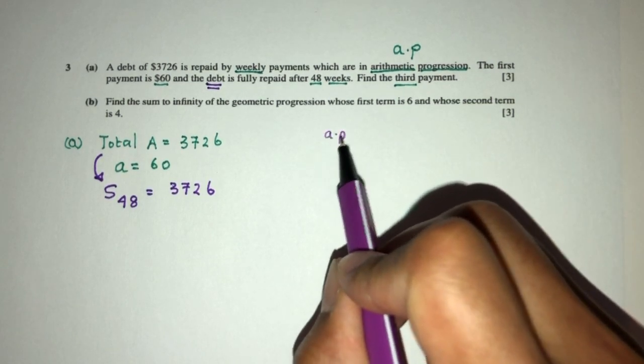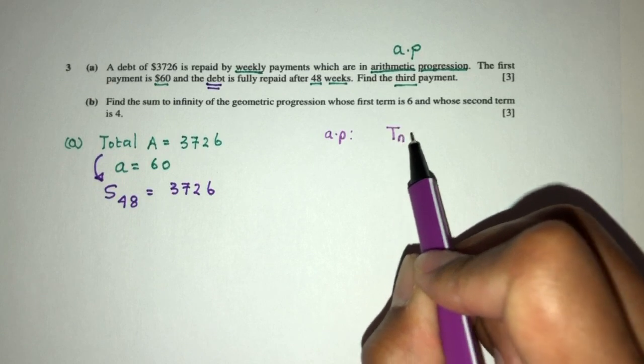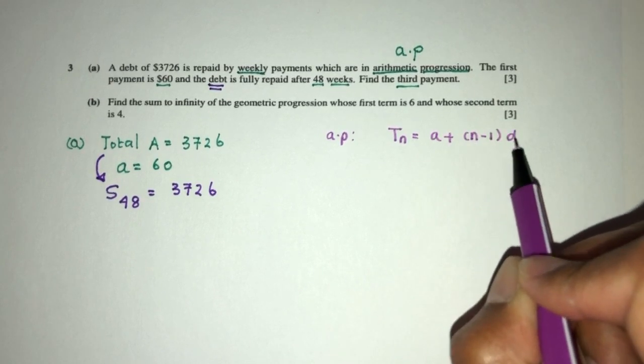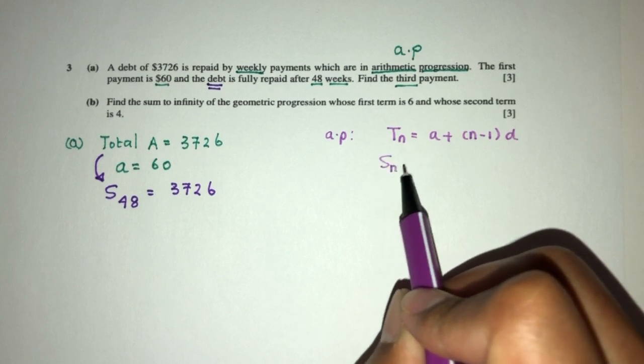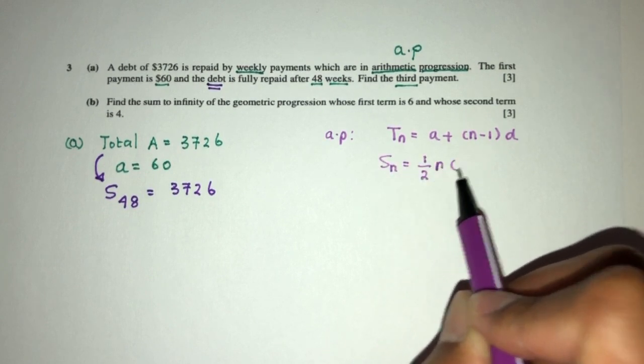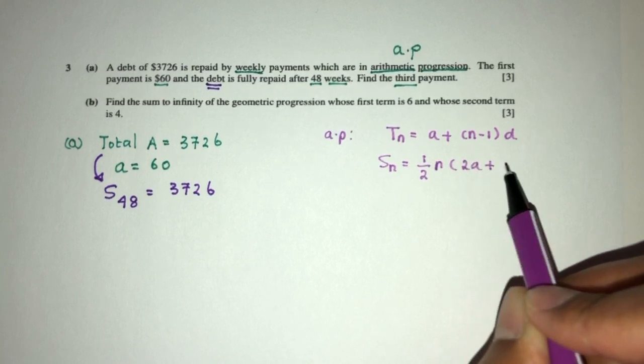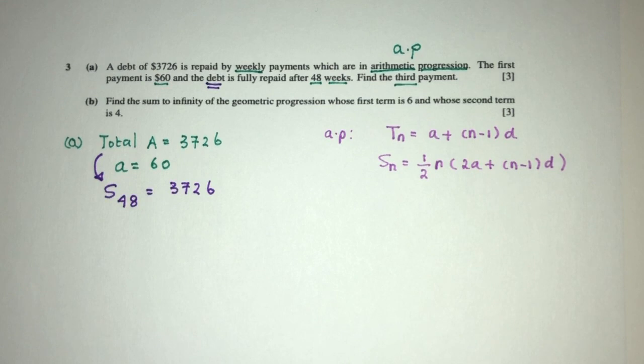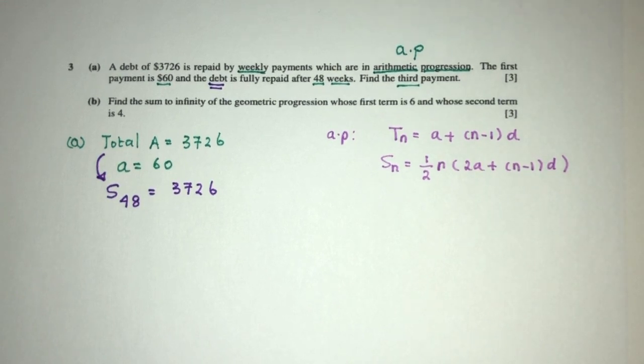I would always recommend writing down all the formulas you know for this progression. So we know this is AP. So the Nth term is given to you by A plus N minus 1 times D. And the sum of the first N terms will be a half N times 2A plus N minus 1 times D. Again, these are given to you on your sheet. You don't need to memorize. However, if you can, definitely do so. It will be to your advantage, so you don't waste much time.